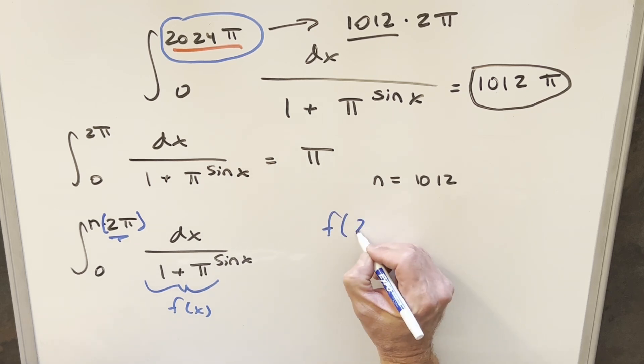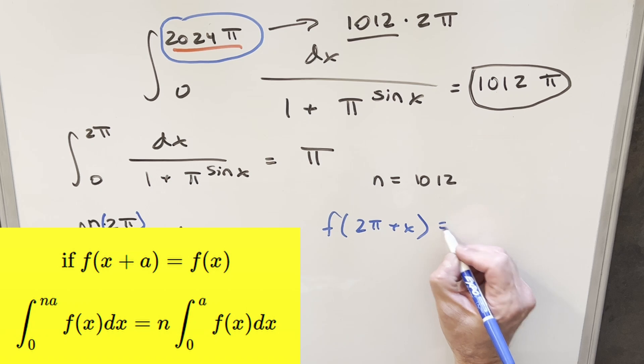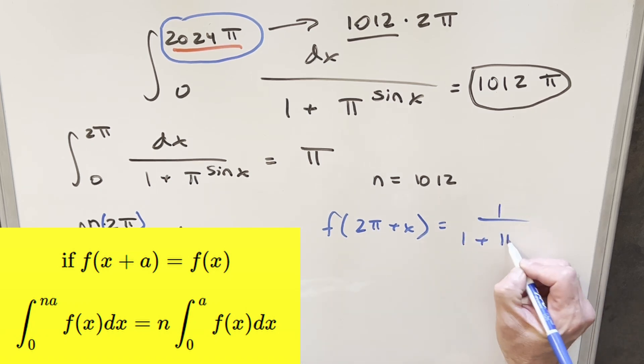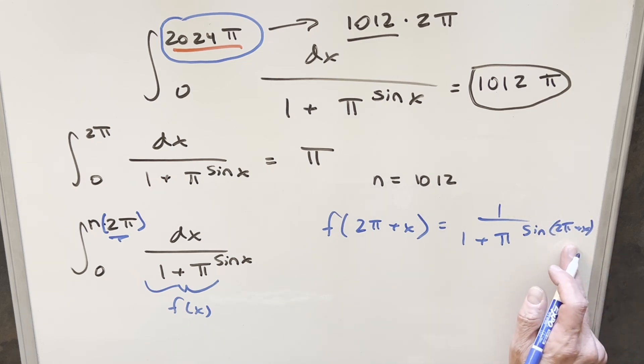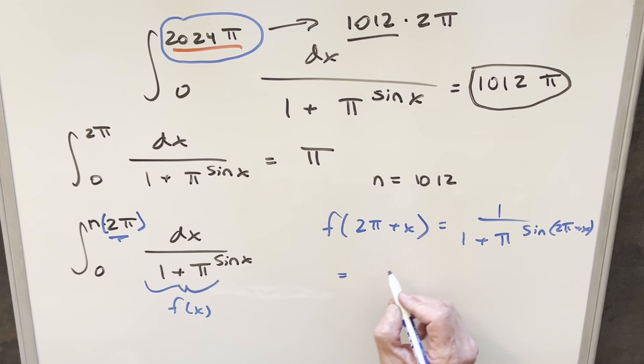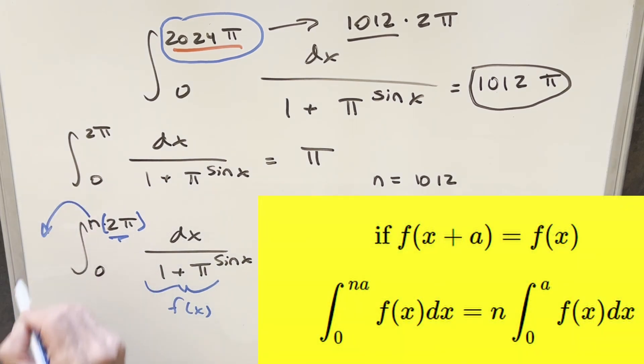And then if this is our function right here, we'll call this our f of x, what I want to look at is what happens at f of 2π plus x. Well, this is just going to be 1 over 1 plus π sine of 2π plus x. But sine of 2π plus x, that's just going to be shifting sine by 2π. So what that's going to do is we get back 1 over 1 plus π sine of x. But that's the same thing as our original function f of x.